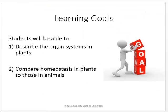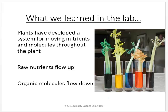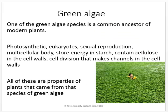Our learning goals are to describe the organ systems in plants and compare homeostasis in plants to those in animals. We already know that plants are multicellular, have eukaryotic cells, and that multicellular life has levels of specialization. We learned in the lab that plants have developed systems for moving nutrients and molecules throughout the plant — that water and nutrients flow up, and that organic molecules flow down.